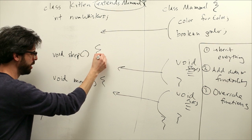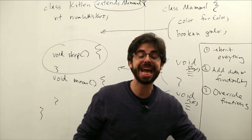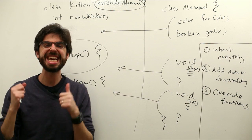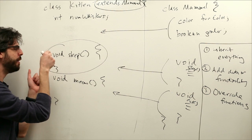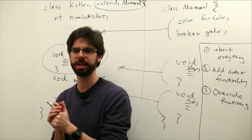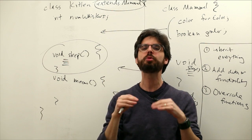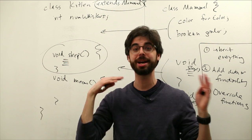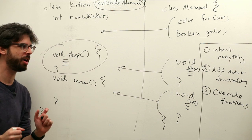So we can override a function. If I write the function sleep here, what this does is it says, instead of, when I call kitten.sleep, instead of doing the functionality that was inherited, execute the functionality that's now in my child class. That's now in my kitten class. So you can override, you can inherit functions, but you can always rewrite it in the child class to override that functionality. So that's one of the other things we can do with inheritance.